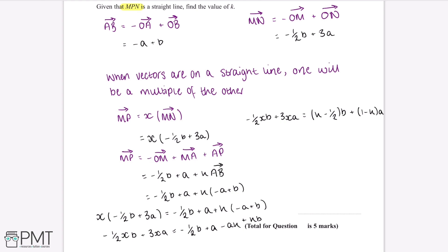Now we compare coefficients for both the A and B terms to form a simultaneous equation. For B: negative half X equals K minus half. For A: 3X equals 1 minus K. To make the X coefficients match, we multiply the B equation through by negative 6, giving 3X equals negative 6K plus 3. Now we have two equations for 3X.